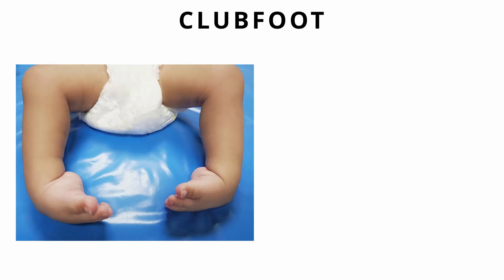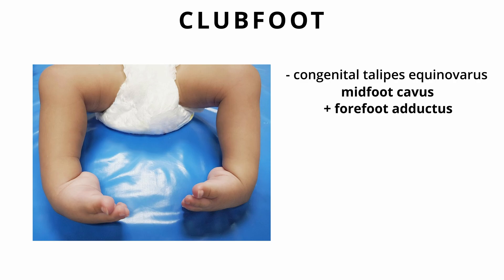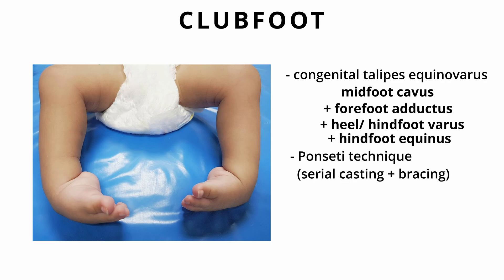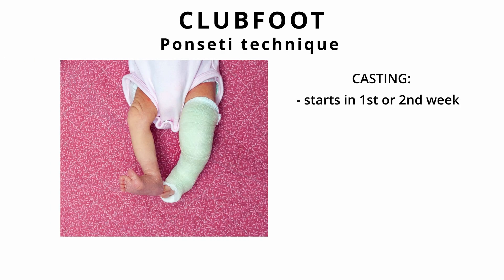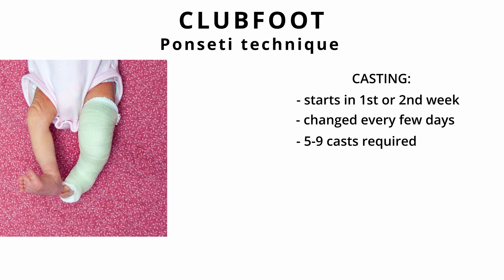Club foot. Club foot is a congenital deformity of the foot otherwise known as congenital talipes equinovarus. It manifests with four main deformities: midfoot cavus, forefoot adductus, hindfoot varus, and hindfoot equinus. In club foot, the gold standard treatment is the Ponsetti technique, which involves serial casting of the foot and bracing. Casting usually starts in the first week or two following birth. Casts are changed every few days and usually five to nine casts are required. Each week the cast is removed, the foot is stretched further toward the correct position, and then it is recasted.